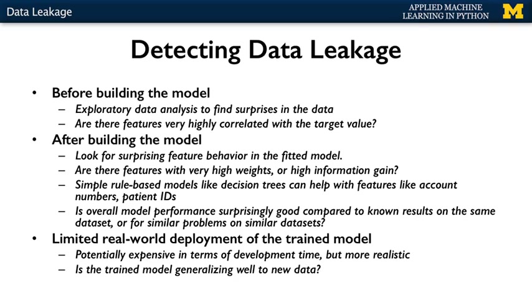Next, look for overall surprising model performance. If your model evaluation results are substantially higher than the same or similar problems on similar datasets, look closely at the instances or features that have most influence on the model. One more reliable check for leakage — though potentially expensive — is to do a limited real-world deployment of the trained model to see if there's a big difference between the estimated performance suggested by model training and development results and the actual results. This check may not give much immediate insight into where the leakage is happening, or if any drop in performance is due to other reasons like classical overfitting.